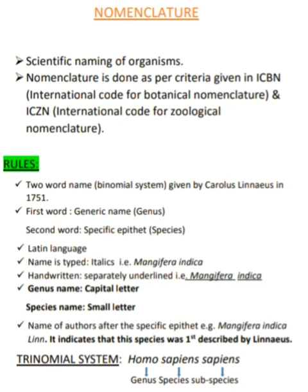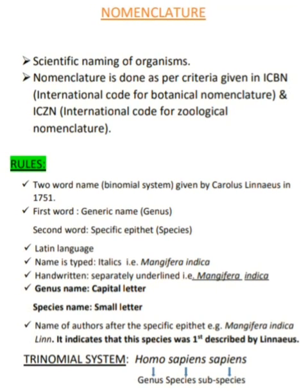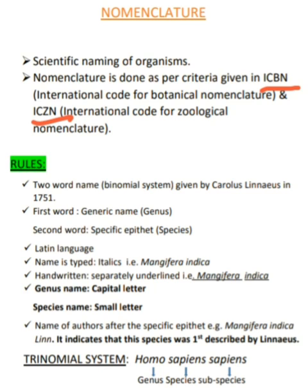basis of certain rules and principles. There are organizations like ICBN — that is the International Code for Botanical Nomenclature — and ICZN, the International Code for Zoological Nomenclature. ICBN is for plants and ICZN is for animals. These are the organizations that have designed rules and principles, and on the basis of these rules, names of particular organisms are given.